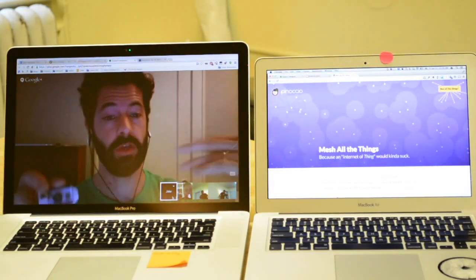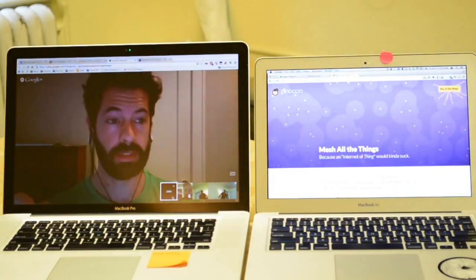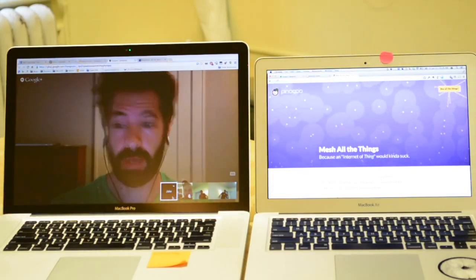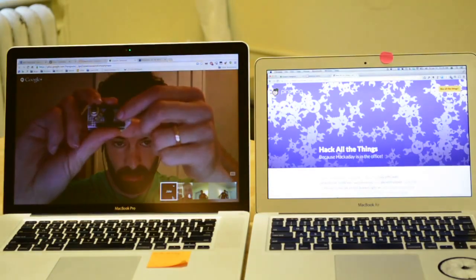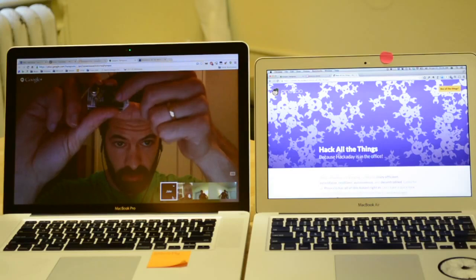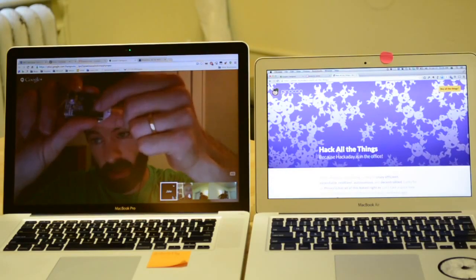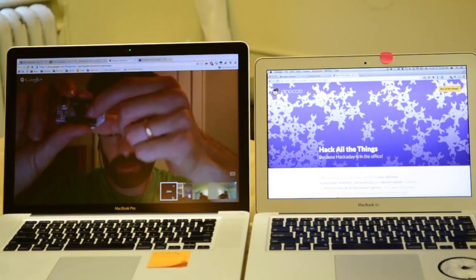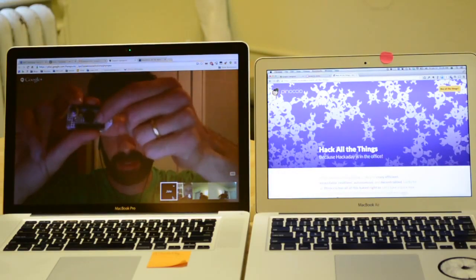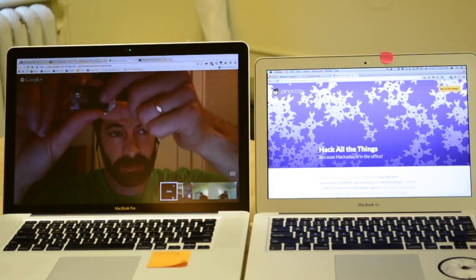And then when it gets a new event, a button was pressed, it can make changes to the site. So if I just press this little button, I have it set up so that if this button is being pressed, all of those little circles turn into Hackaday logos. And actually, if you see the text changes to hack all the things, instead of match all the things.